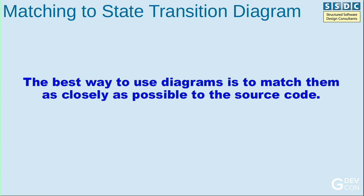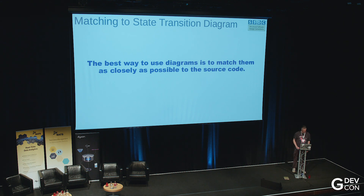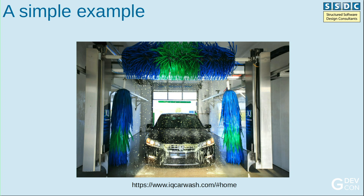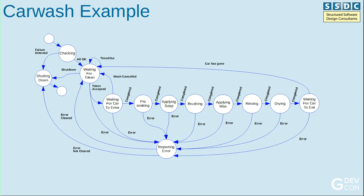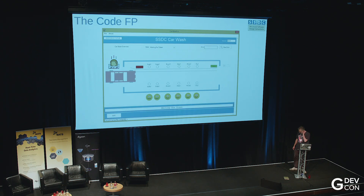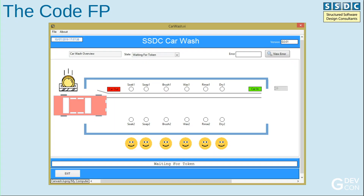The best way to use diagrams is to match them as closely as possible to the source code. If you've got a diagram and it doesn't match, it's kind of a waste of a diagram - you want to look at it and say, 'oh, that's the code.' As a standard example, I copied off of Normski's TLB example. He does a car wash state machine, and being an idiot, I then spent an hour making the car wash look like a car wash.